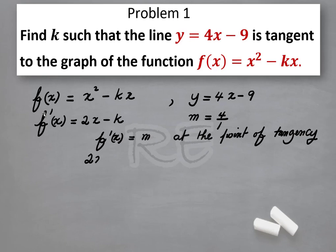We are going to equate 2x minus k to 4, and solve for k in terms of x, since k is the constant we are looking for. By adding k and subtracting 4 to both sides, we get 2x minus 4 is equal to k. Therefore k is equal to 2x minus 4.